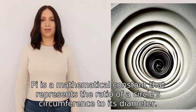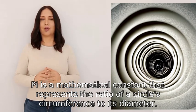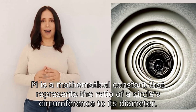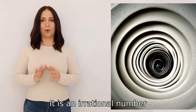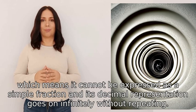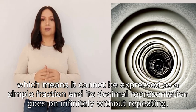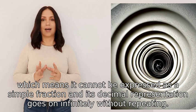Pi is a mathematical constant that represents the ratio of a circle's circumference to its diameter. It is an irrational number, which means it cannot be expressed as a simple fraction and its decimal representation goes on infinitely without repeating.